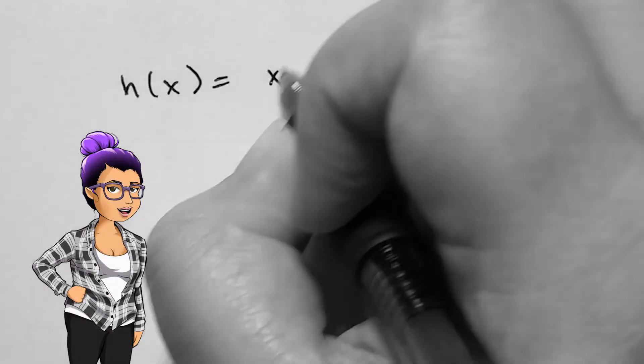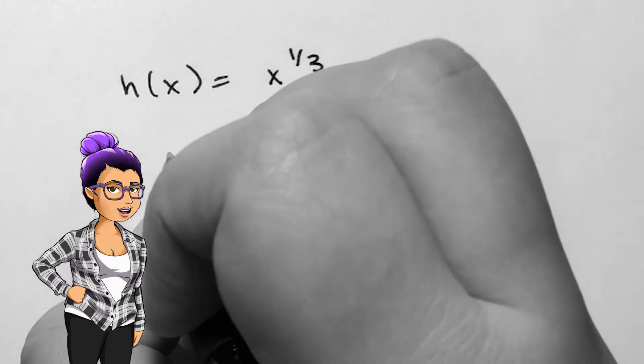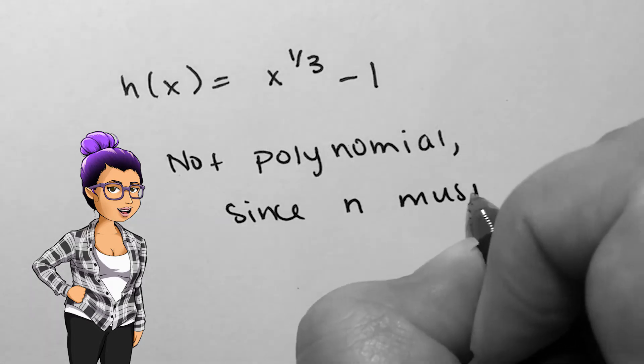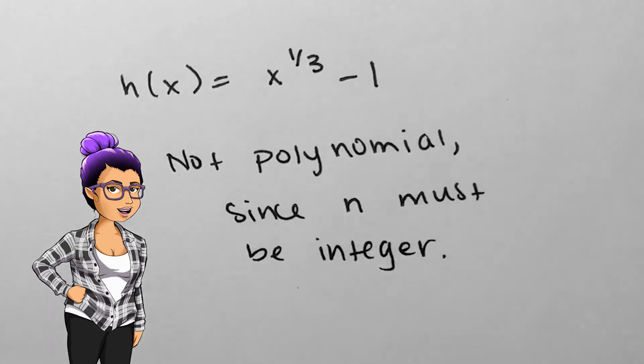If h of x is x to the one-third power minus 1, we are looking at a cube root function that is not polynomial. There is an exponent on the variable that is not an integer.